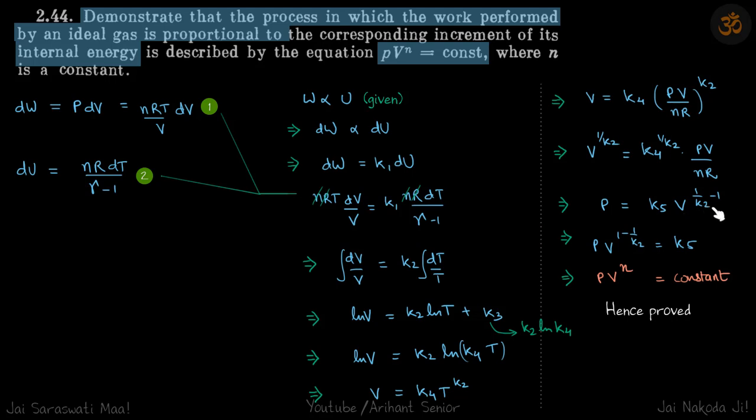So V power 1 by K2 minus 1 times K5. So we'll take volume on the left side of the equation. So PV power 1 minus 1 by K2 equals K5.